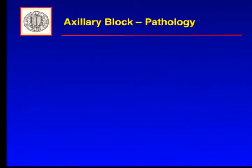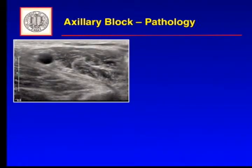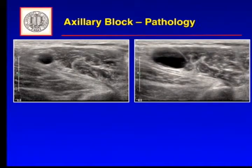Here's an axillary block I did a few months ago. We start scanning the axilla at the level of the conjoint tendon. You'll notice the axillary artery here, conjoint tendon here — that looks okay. But we like to look around, and it looks a little bit different here. We're still at the level of the conjoint tendon but now the artery looks a little bit different. It's enlarged, it's eccentric, and maybe there's something in its lumen as well.